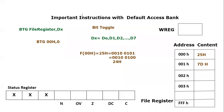After the execution of the instruction, file register 00h content will be modified and it will become 0x24. I hope you have understood this instruction. If you still have any query or confusion, you can post your queries in the comment section. Thank you so much for listening.